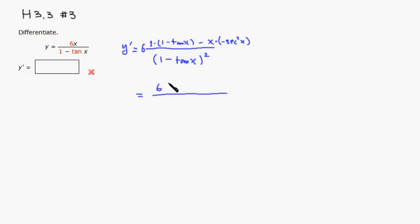Then you have 1 minus tangent of x, and you have minus minus, so plus x secant squared of x.